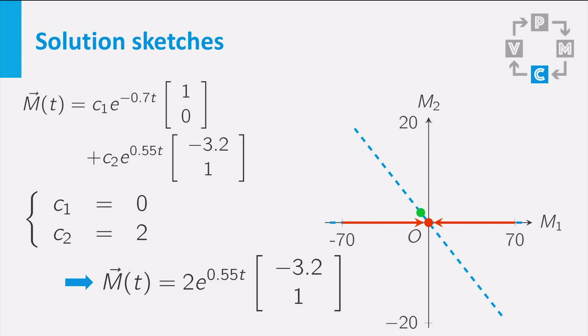All values in the solution m therefore become bigger and bigger. But m remains a multiple of the eigenvector belonging to the positive eigenvalue. You can sketch this like this. For a negative value of c2, the conclusion is that m is a negative multiple of the second eigenvector. This leads to a sketch like this.